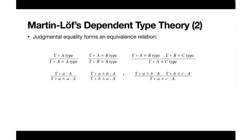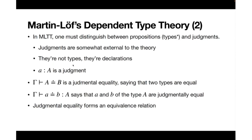The main idea here is that judgmental equality is not a proposition. If a proposition has a proof, with judgments they are just declared and asserted — there is no proof of a judgment in that sense.